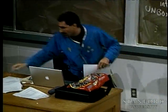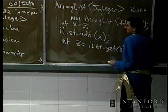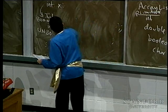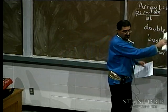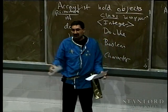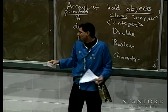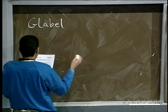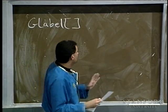Another quick example: just like you can have an array of objects — an array of GOvals or whatever you want — you can do the same with ArrayList. And with ArrayList of objects you don't need to worry about boxing/unboxing because GOval, GRect, etc. are already objects. So if I have an ArrayList of GLabels: 'ArrayList<GLabel> gl = new ArrayList<GLabel>()', this creates an empty list of GLabel objects.